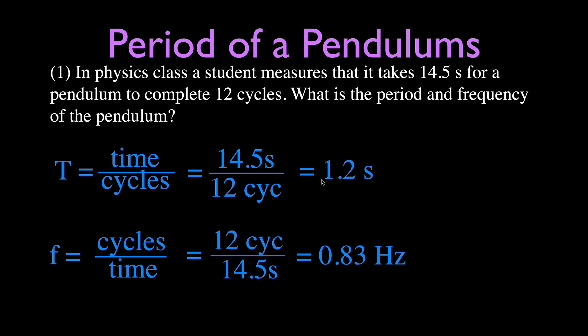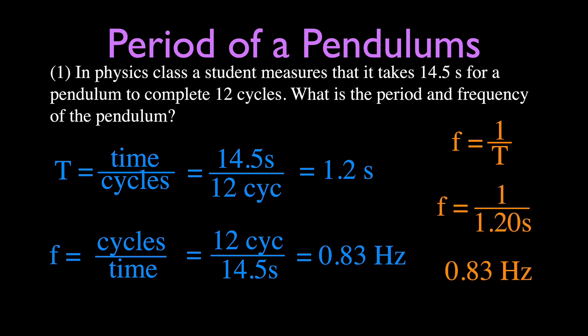Since it takes more than a second for one cycle, the pendulum won't complete a full cycle in one second. We can also cross-check: using frequency equals 1 over the period, 1 divided by 1.2 seconds gives the same 0.83 hertz. That's problem number 1 of 5.